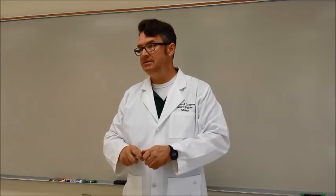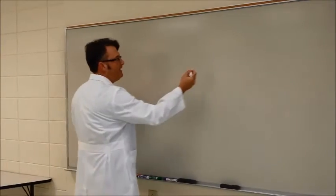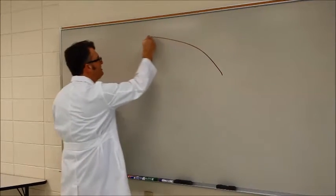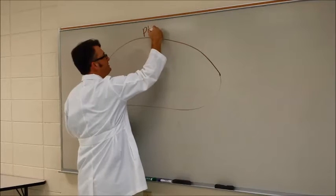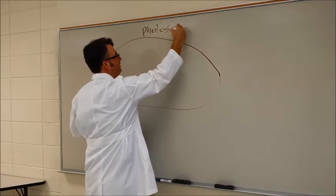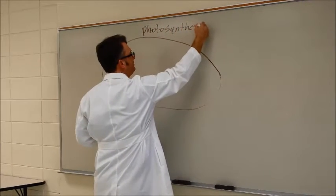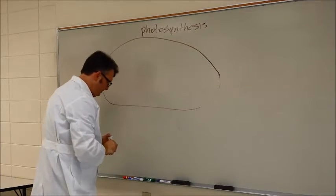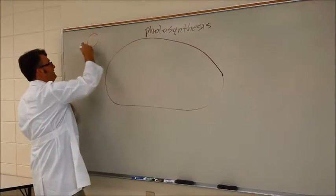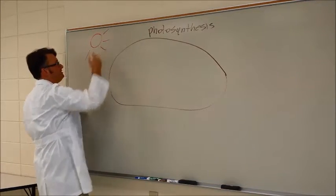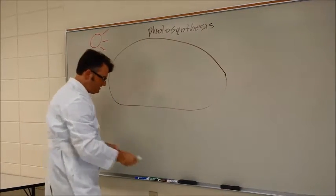I'm going to start out talking about the chloroplast, which is where photosynthesis takes place. This is usually in the leaves of a cell. Photosynthesis is what I want to talk about first. What is incredibly important is sunlight. Sunlight is incredibly important to this whole process.